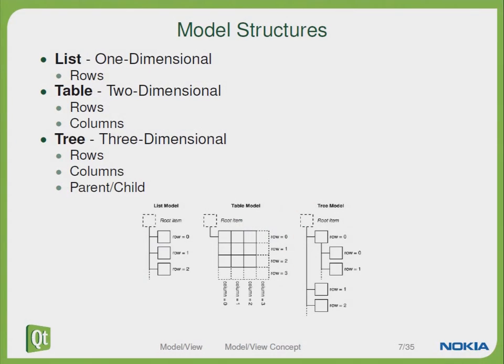In Qt we have three predefined types of models. The easiest one is the list model, which just contains a list of rows. If we would like to have a two-dimensional model we can use the table model, which will have the data separated in rows and columns. And whenever you need a hierarchical model you can use the tree model, which has rows and columns as well as the parent-child relation among the items.